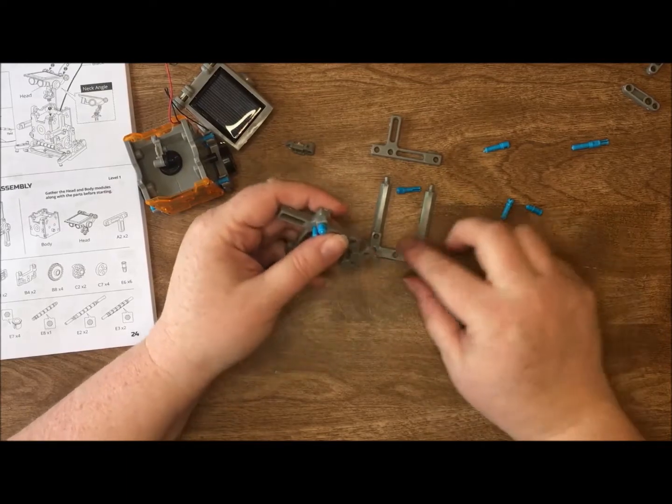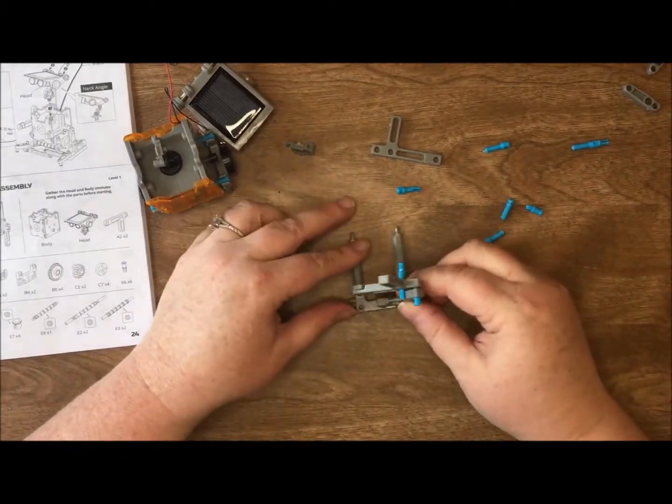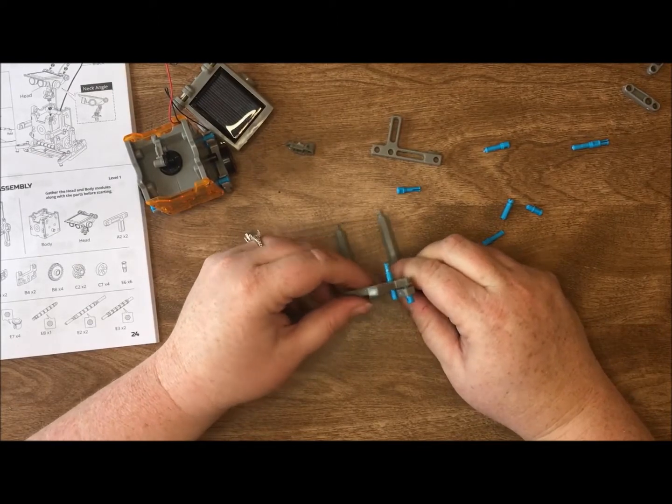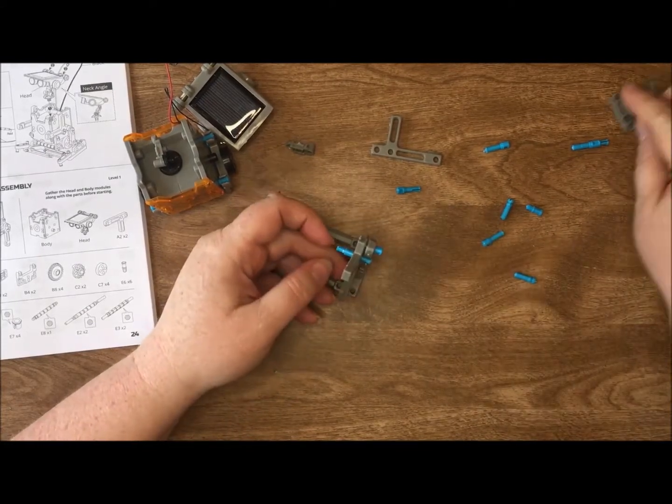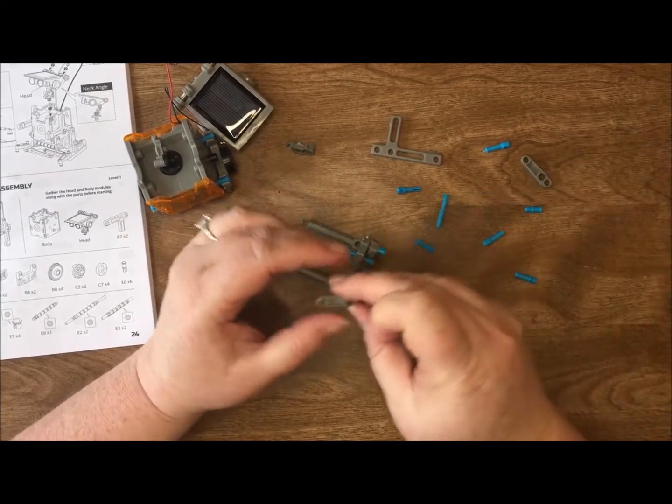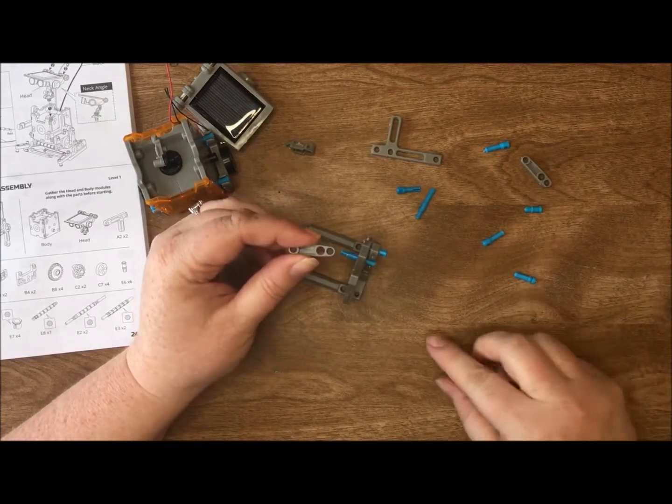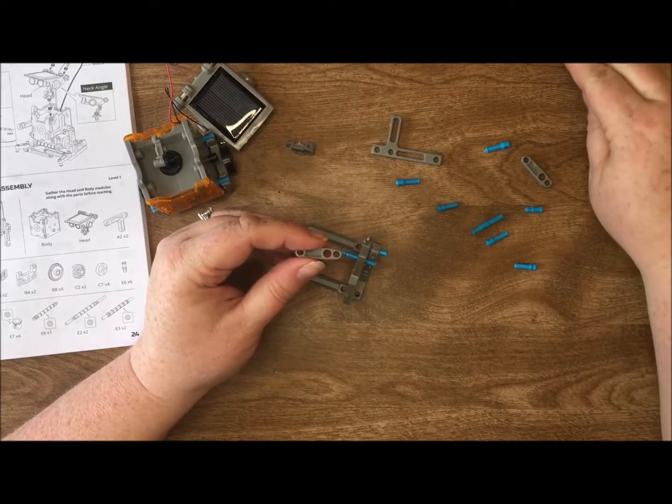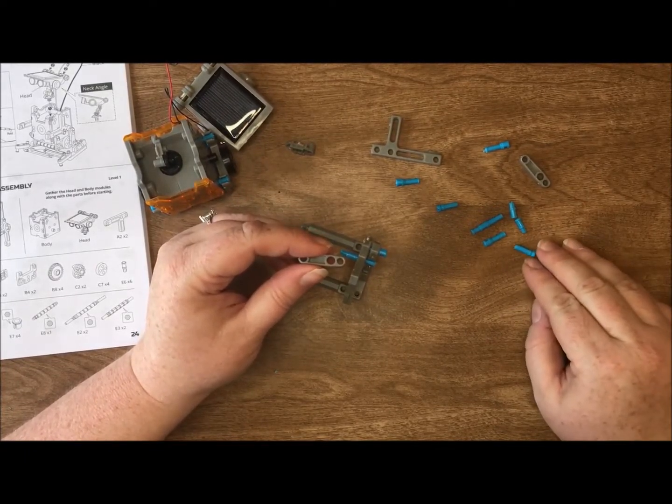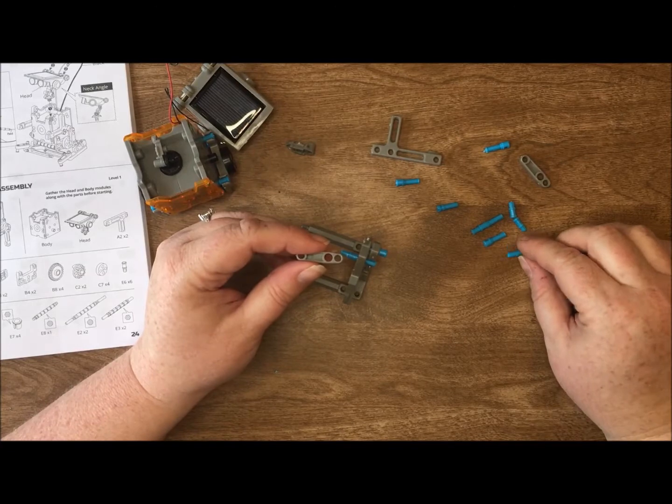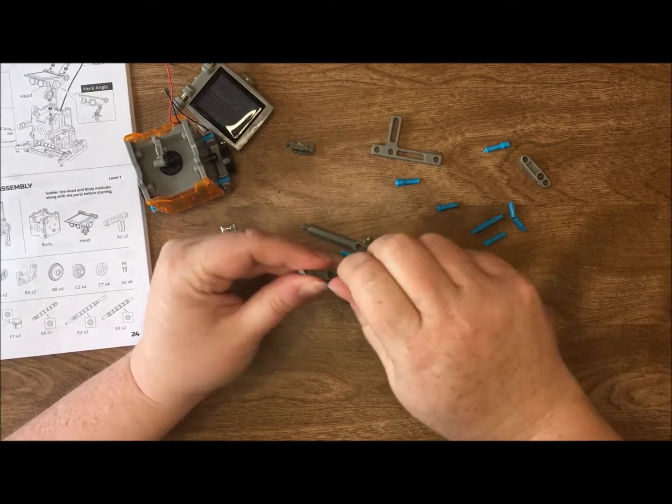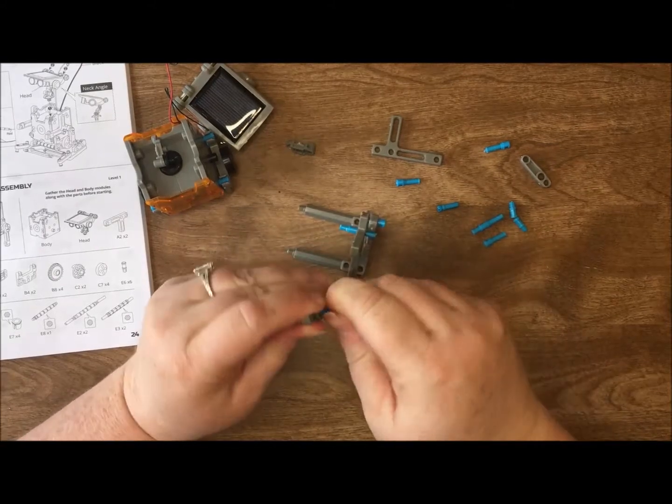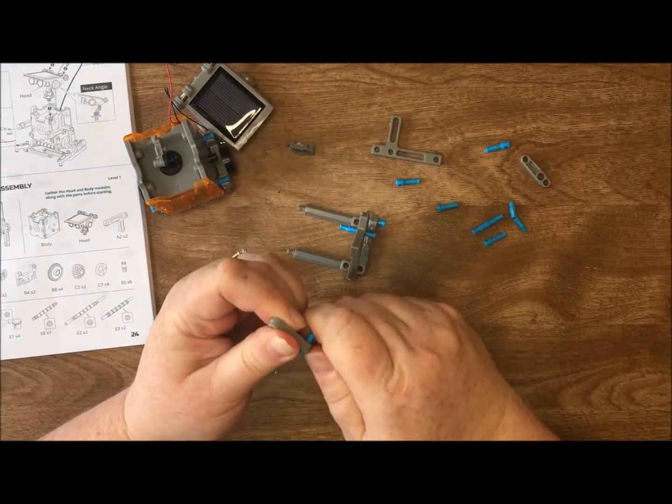Once you have them connected, we're going to attach them to our base. Now, when I first built this, I actually put the wrong sides on. So I have them reversed. Right here in my tutorial, we didn't discover this until the whole robot was built and it wasn't working. We'll show you this later. Like I said, I think it's important to show the mistakes so that you can learn from somebody else's mistakes and pay attention.